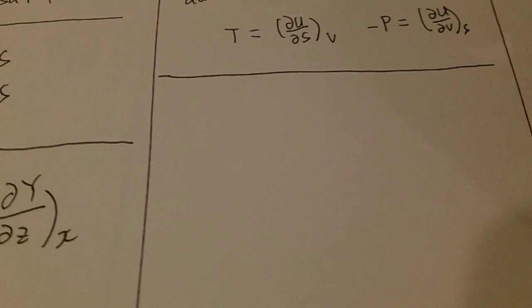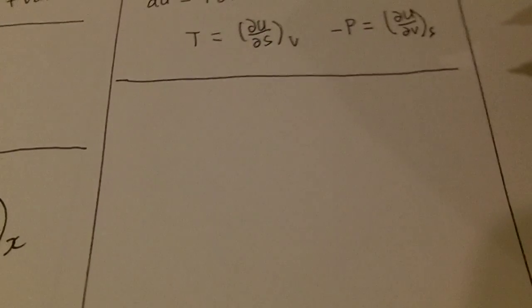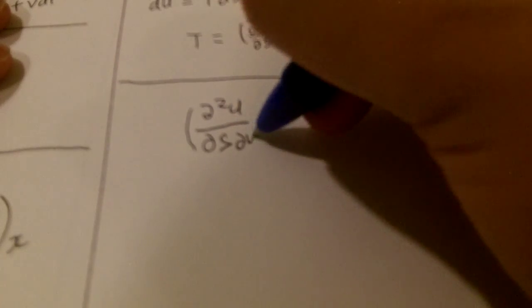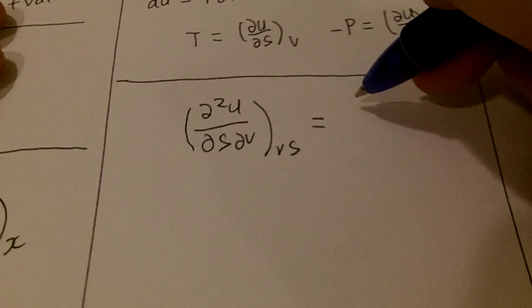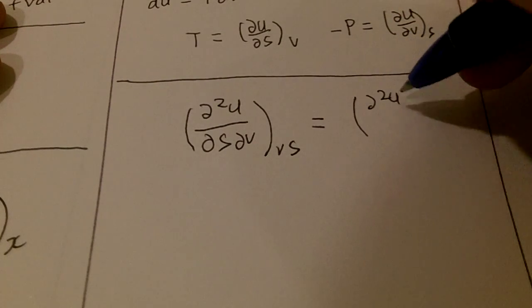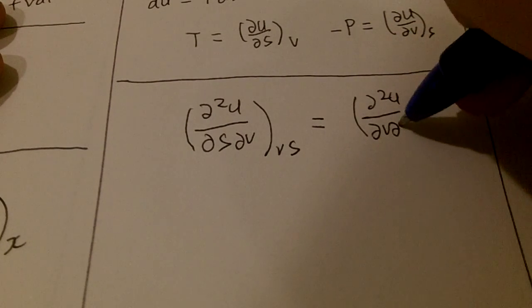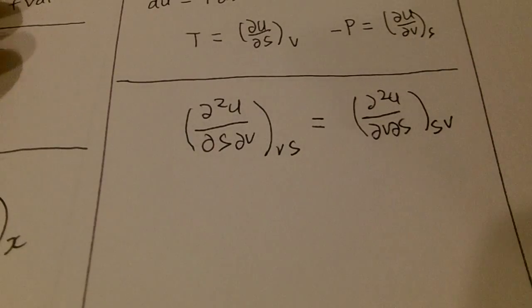Now, if we were to apply partial differential rules, we can actually see that del squared u del s del v, holding v and s constant, equals to del squared u del v del s, holding s and v constant.